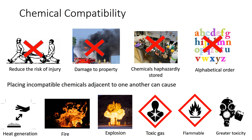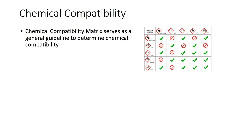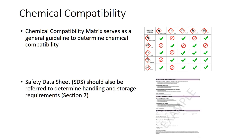Laboratory staff should store or dispose of chemicals based on their hazardous nature — flammable, corrosive, toxic, reactive — and on their chemical compatibility. To determine chemical compatibility, staff should refer to the chemical compatibility matrix, which serves as a general guideline, and the Safety Data Sheet (SDS), which contains handling and storage requirements under Section 7.